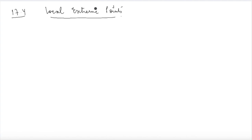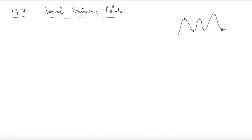I am going to pick up some questions from 17.4, which is on local extreme points. We have already discussed what local extreme points are. Basically, these are extreme points which are found in a very small set. So for example, you have a function like this, then you have multiple extreme points, and all of these points are called local extreme points because they are either a maxima or a minima in a small set.